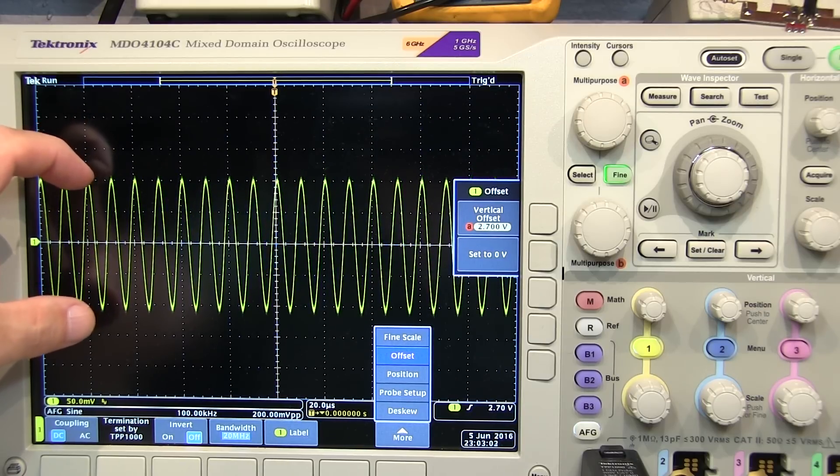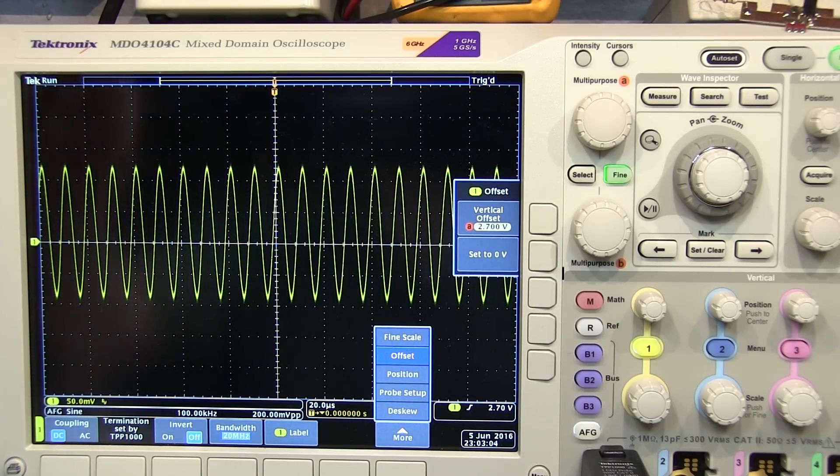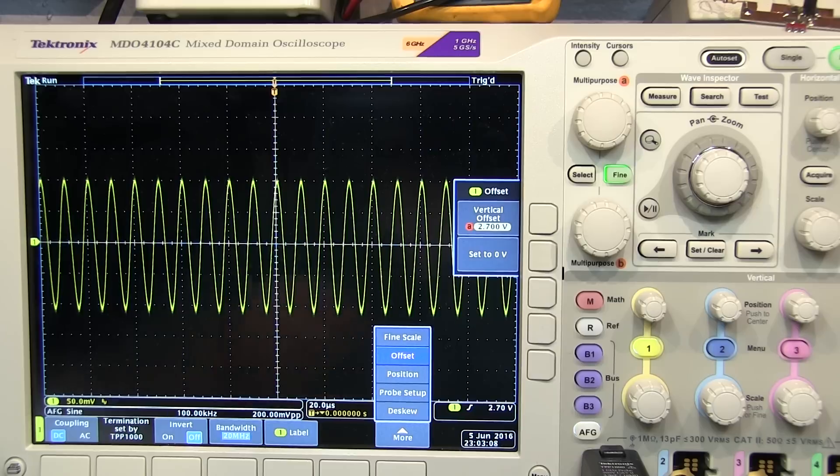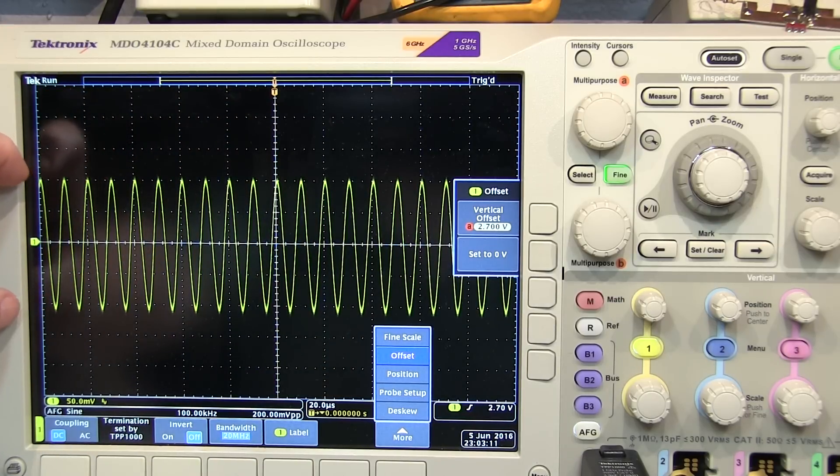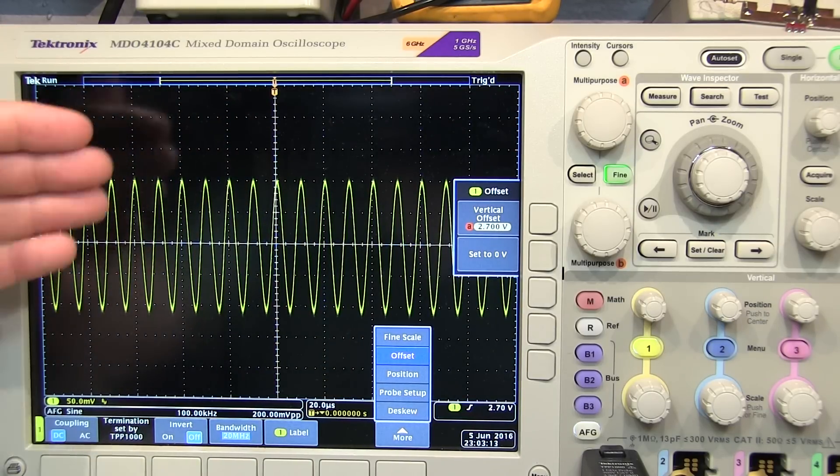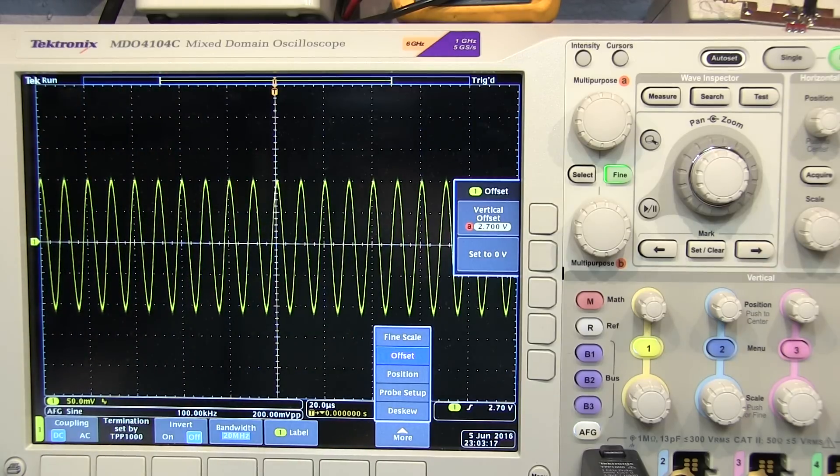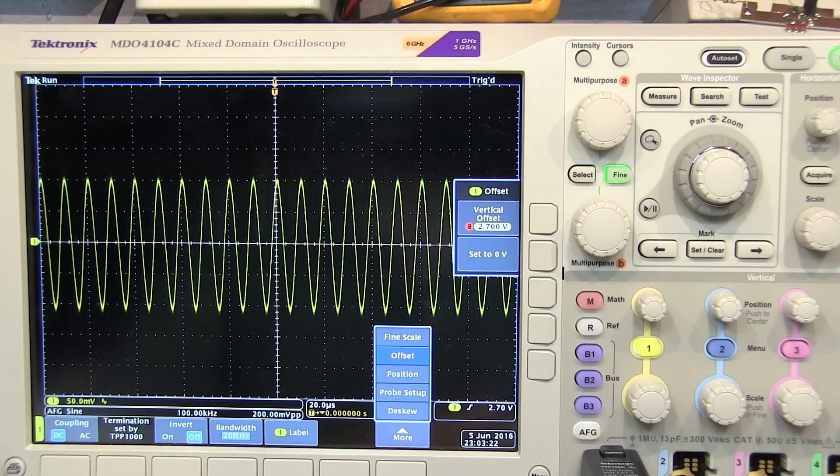If I was AC coupled, I wouldn't see this DC shift in that waveform up or down, as I rock the power supply up or down. So as you're doing analog design, you may find that it's very helpful sometimes to be able to see both the bias level and the AC or signal content of your signal simultaneously. And the offset capability of the scope can be very handy for this.